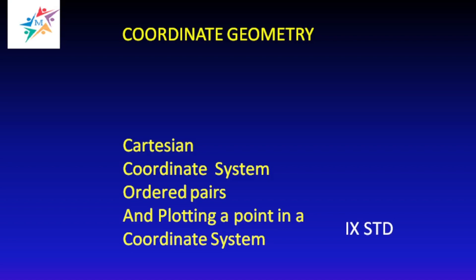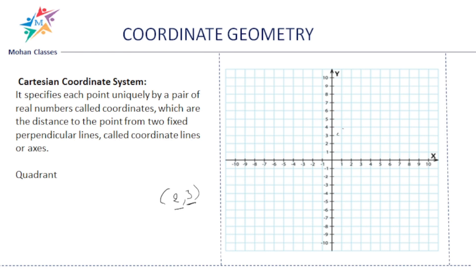Welcome to Mohan Classes. In this video we are going to talk about coordinate geometry — it is for ninth standard. It is the easiest chapter; we could complete it within half an hour. Now, what is a coordinate system? The Cartesian coordinate system specifies each point uniquely by a pair of real numbers called coordinates, which are the distance to the point from two fixed perpendicular lines called coordinate lines or axes. Let us take (2, 3) — a pair of real numbers called coordinates.